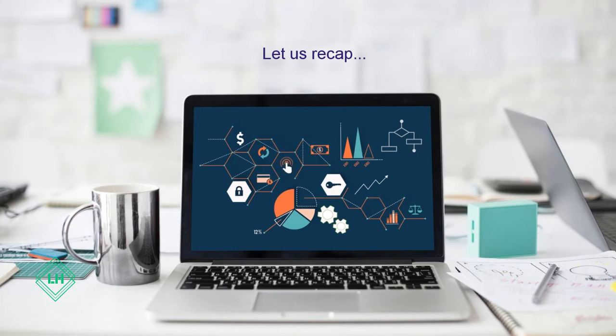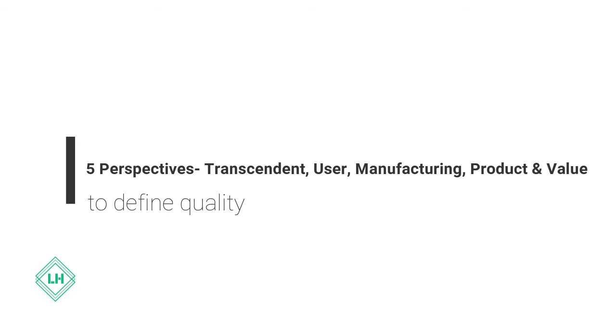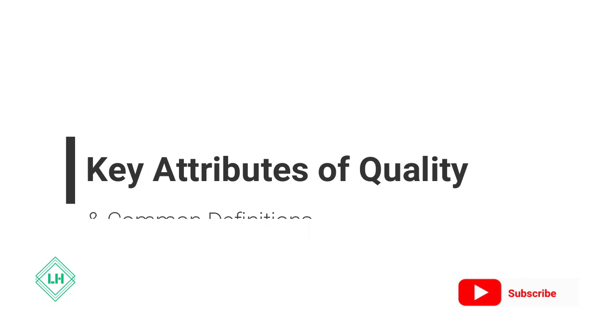Here we come to an end to this lesson. Let us quickly recap what we learned so far. We learned that perception of quality varies from person to person. We also saw various ways to define quality based on five perspectives. We learned about key quality attributes, and at the end we saw common definitions of quality.